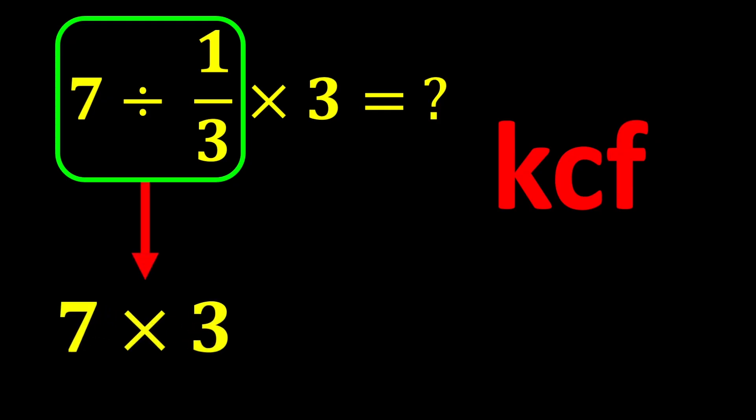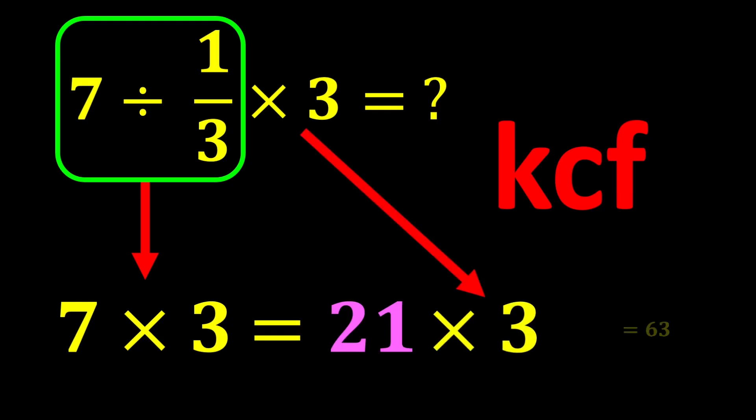In this expression, we keep 7 as it is, change division to multiplication, and flip 1 over 3 to 3. 7 times 3 gives us 21. Finally, 21 times 3 gives us 63. 63 is our correct answer.